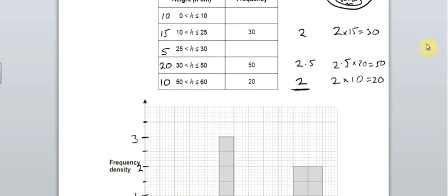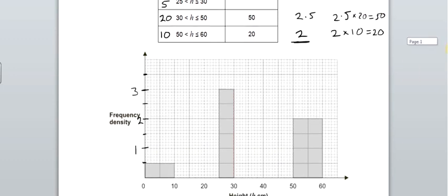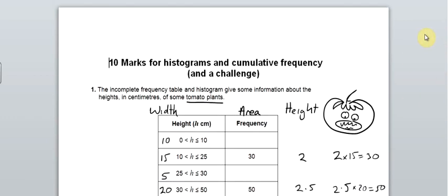And the next bit is straightforward. So the 0 to 10 bar has got a height of 0.5. So it's 10 wide and it's 0.5 high, which means it's got an area of 5. So that goes in there.